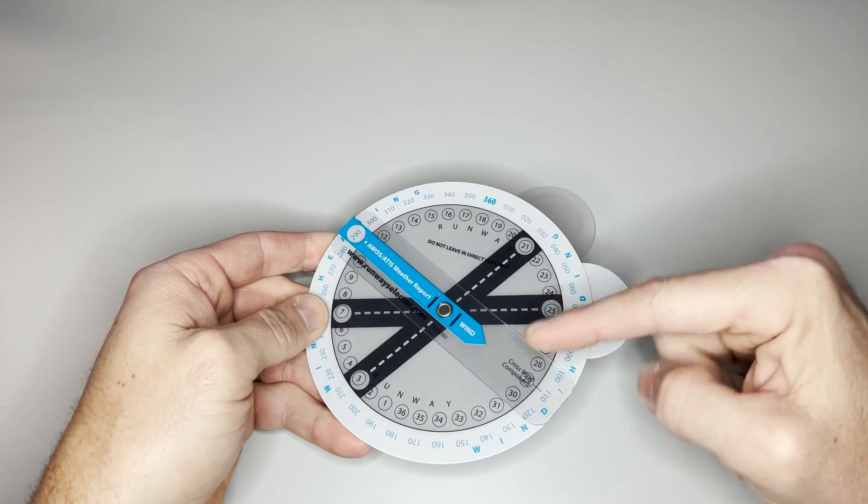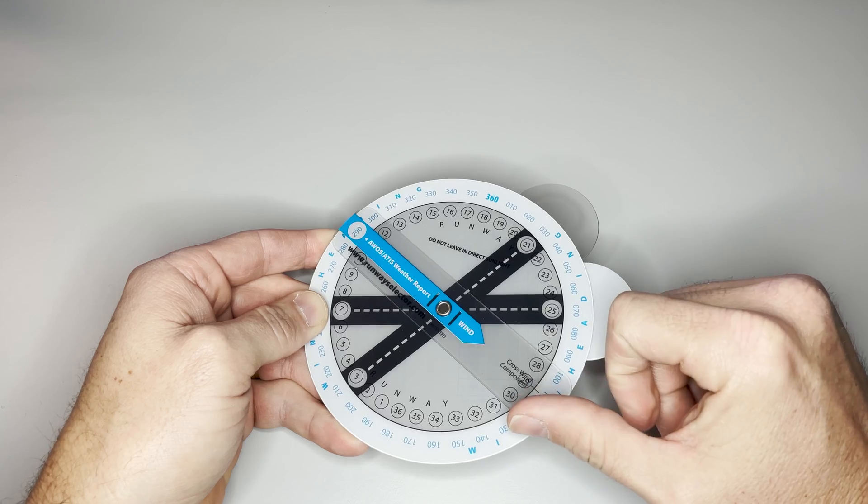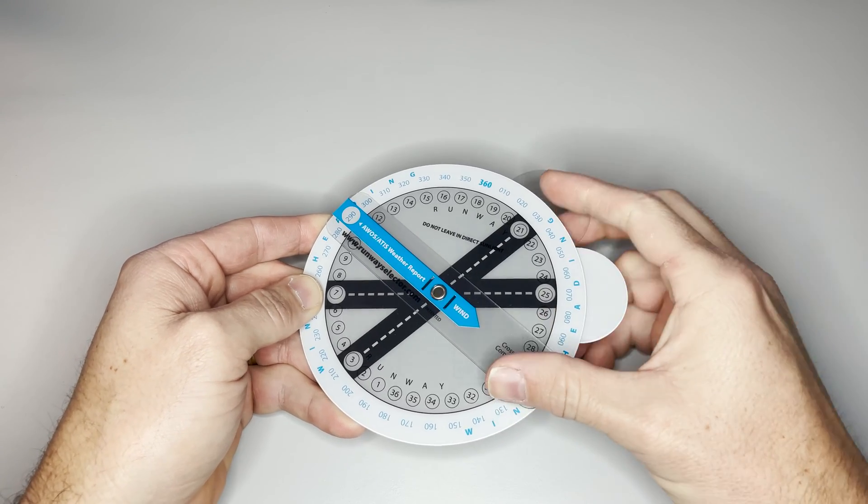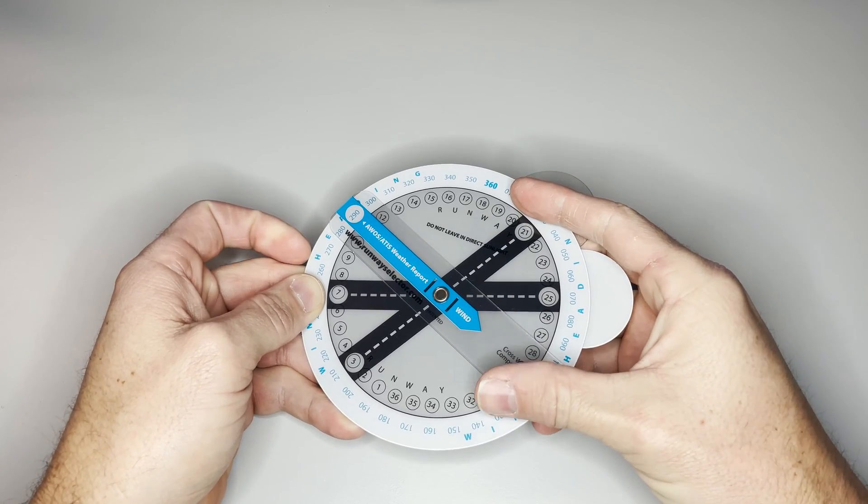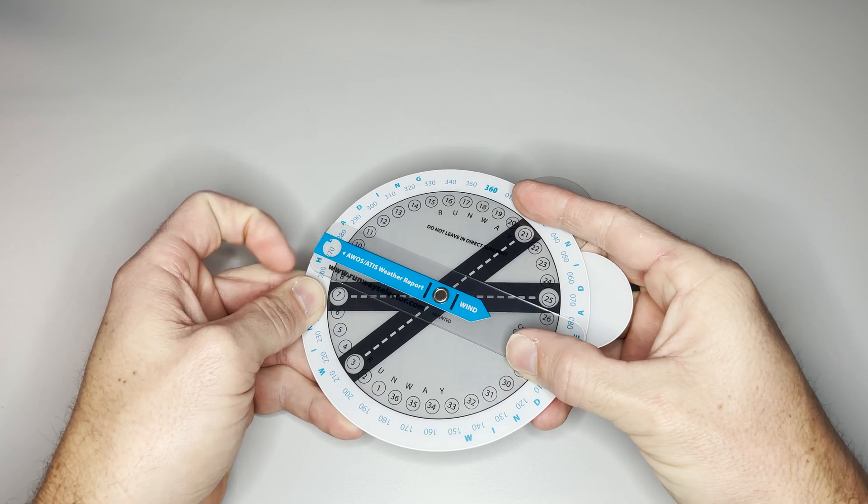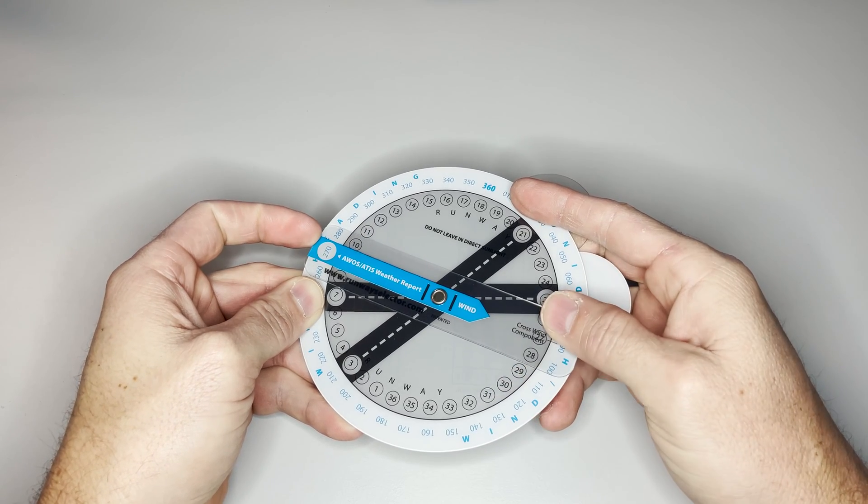Now I can take the wind indicator and match it up to the wind that I can find on a METAR or an ATIS. At Lunkin, the wind is often out of the west, so I'm going to go to 270 and it's at 10 knots.